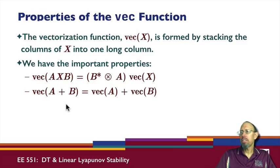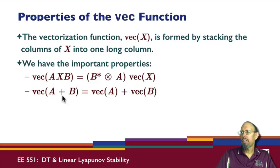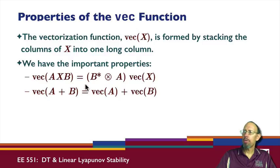Here are the important properties of the VEC function. If I take VEC(AXB), that equals the Kronecker product (B^T ⊗ A) times VEC(X). Similarly, the vectorization of a sum of two matrices equals the sum of their vectorizations, so the VEC function is linear in that sense. These are the most important VEC properties for our purposes.